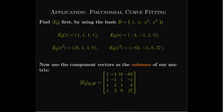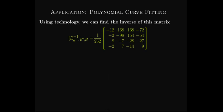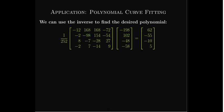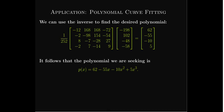We take those vectors in R4 and use them as the columns of our matrix representation, giving us a 4-by-4 matrix. We use technology to calculate its inverse. Once we have the inverse, we multiply it by the vector of specified y-values — negative 198, 102, negative 48, negative 58 — and we get a vector in R4. Those are the coefficients of the polynomial we're looking for.